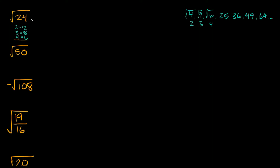So the square root of 24 we can break down into the square root of 4 times the square root of 6. And if we simplify further, the square root of 4 is equal to 2, so we're multiplying 2 times the square root of 6. And that would be your simplified answer: 2 times the square root of 6.